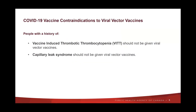Fortunately, contraindication for COVID-19 vaccines is quite rare, and the only absolute contraindications relate to viral vector vaccines. Those include people with a history of vaccine-induced thrombotic thrombocytopenia following a previous viral vector vaccine, and capillary leak syndrome. Those with contraindications to viral vector vaccines can be vaccinated with mRNA vaccines.